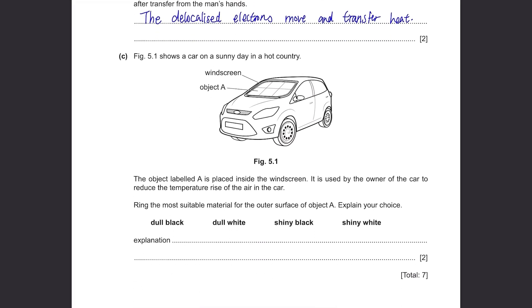Part C. Figure 5.1 shows a car on a sunny day in a hot country. The object label A is placed inside the windscreen. It is used by the owner of the car to reduce the temperature rise of the air in the car. I'm sure you guys have seen this before. Ring the most suitable material for the outer surface of object A. Explain your choice. If it's there to reduce the temperature rise, it should try to reflect as much heat as possible. So of course, it cannot be black. Black substances absorb heat very well. And also, it should be shiny so that it can reflect the heat better.